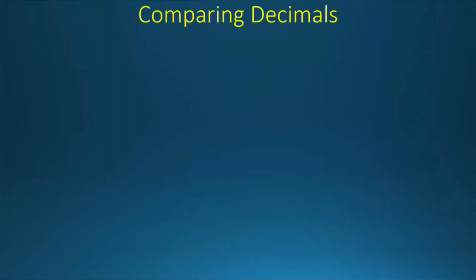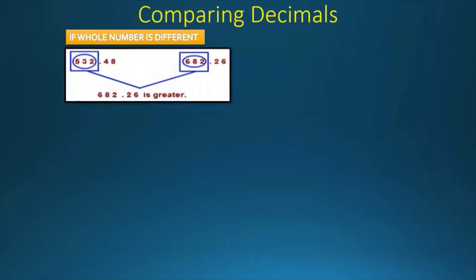First we'll learn about comparing decimals. If the whole number is different, here we have an example 532.48 and 682.26. If the whole number is different, 682.26 will be greater.